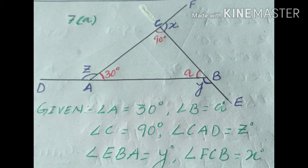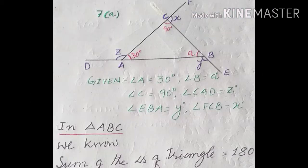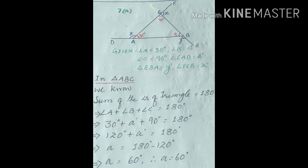In order to find x, y, and z, we first have to find the interior angle B. In triangle ABC, we know the sum of angles of a triangle is always equal to 180 degrees. So angle A plus angle B plus angle C equals 180 degrees. We know angle A is 30 degrees and angle C is 90 degrees.